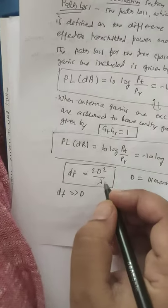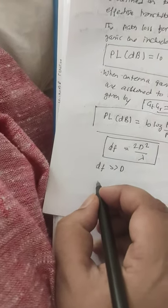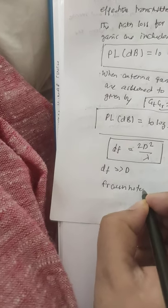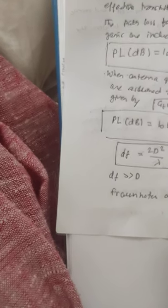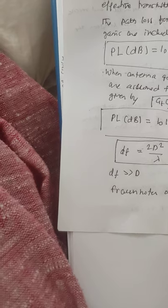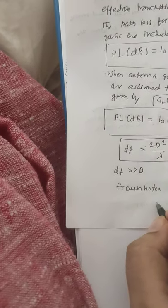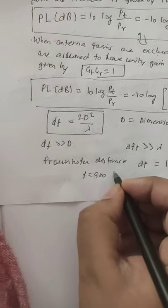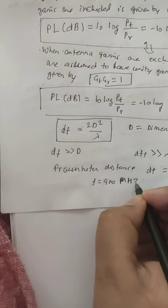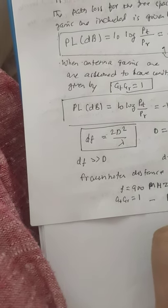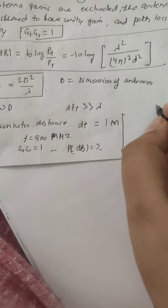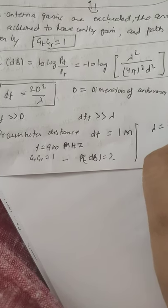This can be easily understood with an example. The maximum dimension of the antenna D is given as 1 meter, and the operating frequency is 900 MHz (GSM band). The transmit and receive gains Gt and Gr are both unity. We need to calculate the path loss.